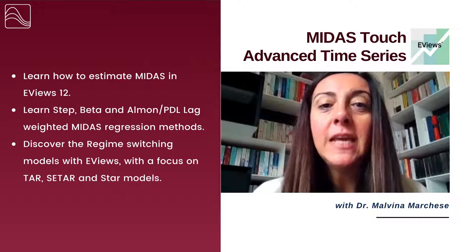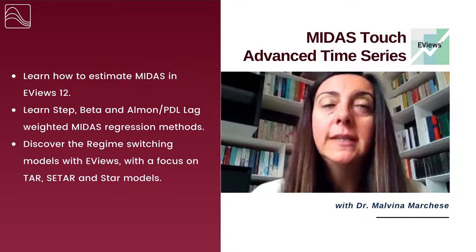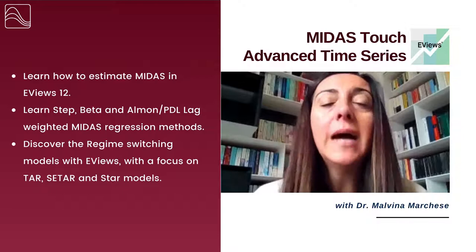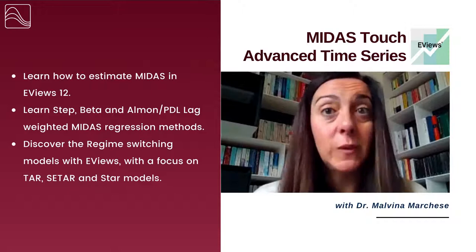Day number two, as you can see from the agenda, is dedicated to advanced time series models for forecasting that account for regime switching. We will have an in-depth discussion about all the possible types of regime switches. Shall we use a threshold regression model where the regime switch depends on an observable threshold indicator? Or are we better off with a Markov switching model where the regime switch depends on a hidden endogenous probability process determined within the model itself?